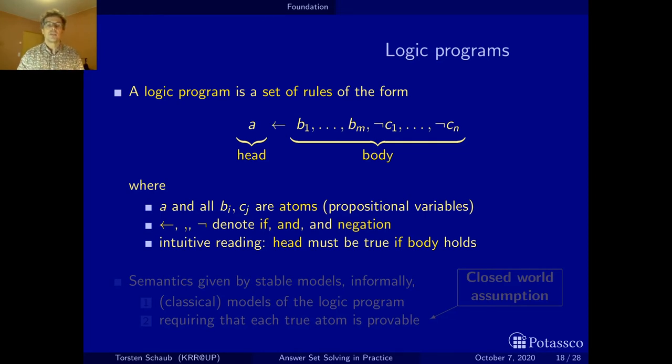To be more specific, we have these symbols. This is the if, so the head if the body is true. Then we have conjunctions, and the comma represents the conjunction, the and operator. There is the negation, and negation will play an important role because it gets a slightly different meaning in our context. The intuitive reading of such a rule is simply the head must hold or is provably true if the body holds and all the conditions have been established.